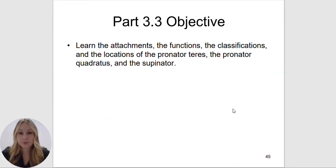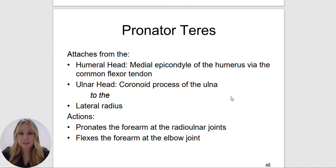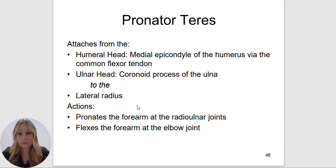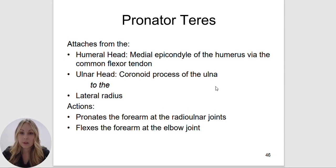The pronator teres, pronator quadratus, and supinator all have their actions in their names. The pronator teres will pronate the forearm at the radial ulnar joints and also flex the forearm. It attaches to the humeral head via the medial epicondyle of the humerus via the common flexor tendon, and the ulnar head — the coronoid process of the ulna. Don't confuse this with the coracoid process of the scapula. A way to remember: coronoid process has an N in it, as does ulna — so coronoid process is on the ulna. Coracoid process has a C, as does scapula — so coracoid process is on the scapula. The pronator teres inserts to the lateral radius.